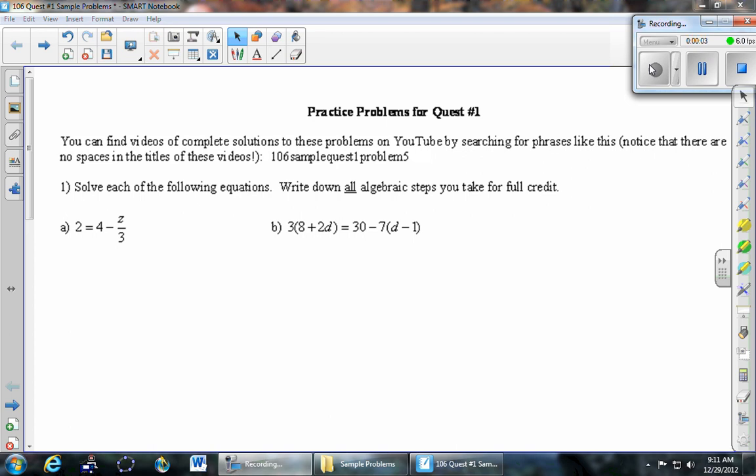This is problem number one on the practice problems for quest number one. Solve each of the following equations. Write down all algebraic steps you take for full credit. Part A: 2 equals 4 minus z over 3.